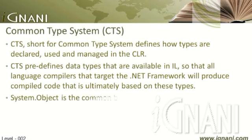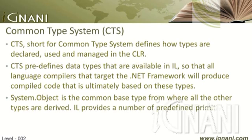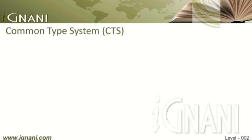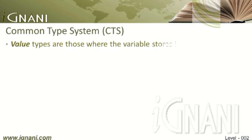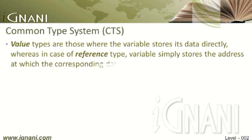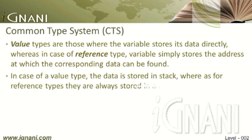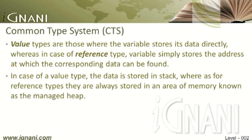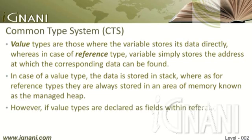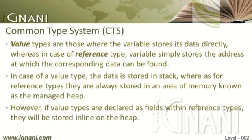In .NET framework, System.Object is the common base type from which all other types are derived. IL provides a number of pre-defined primitive data types and makes a strong distinction between value types and reference types. Value types are those where the variable stores its data directly, whereas in case of reference types, the variable simply stores the address at which the data can be found. IL also specifies how data is stored: value types are stored on the stack, while reference types are stored on the managed heap. However, if value types are declared as fields within reference types, they will be stored inline on the heap. In the coming chapters, I will cover the stack and the heap and all built-in value types.